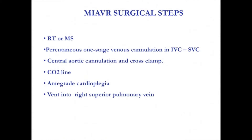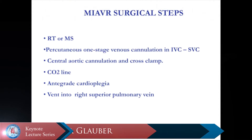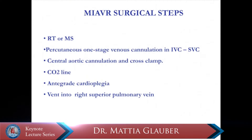The surgical steps are as follows. After performing right thoracotomy or mini sternotomy, we open the pericardium and a percutaneous cannula is inserted through the femoral vein into the right atrium to achieve venous drainage under transesophageal echocardiographic guidance using the Seldinger technique. A direct aortic cannulation is then performed using a flexible cannula. After establishing vacuum-assisted cardiopulmonary bypass, a left ventricular vent is placed through the right superior pulmonary vein. The ascending aorta is clamped and an antegrade cardioplegic solution is given into the aortic root or selectively into the coronary ostia.